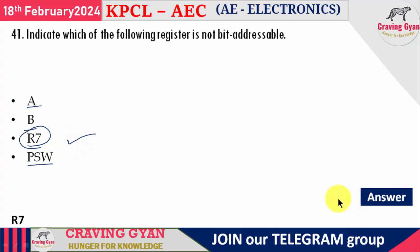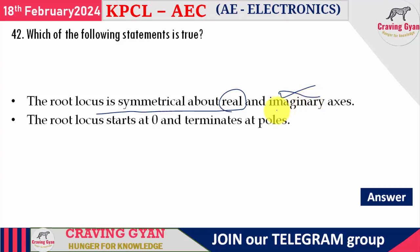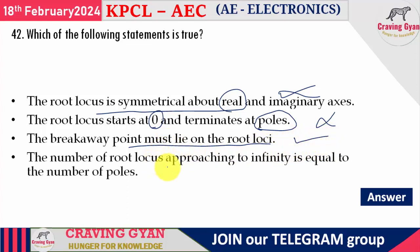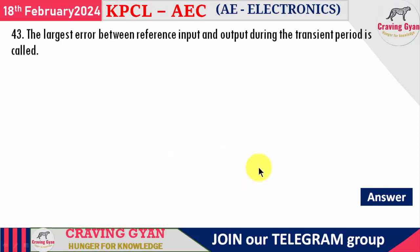41st question: which register is not bit-addressable? Accumulator A and B are bit-addressable; PSW (Program Status Word) is also bit-addressable. R7 cannot be bit-addressed — option C, R7. 42nd question: which statement is true for root locus? Root locus is symmetrical about the real axis (not imaginary axis). The breakaway point lies on root locus — option C is correct.